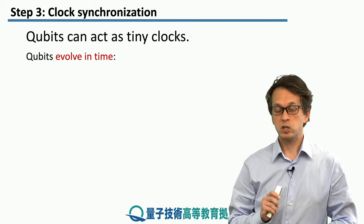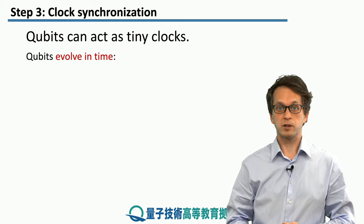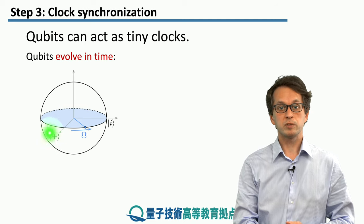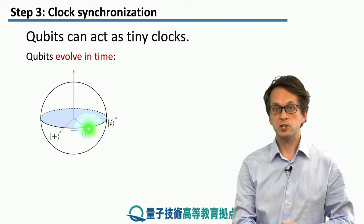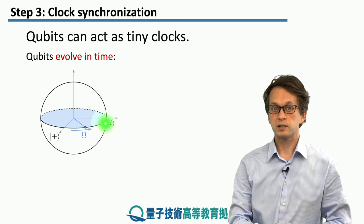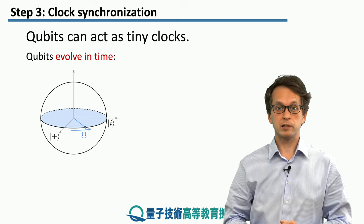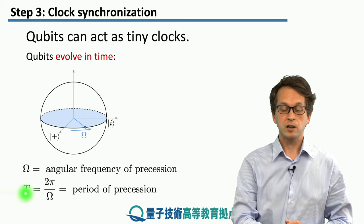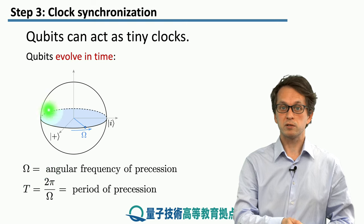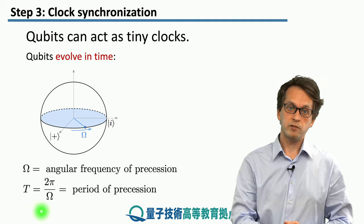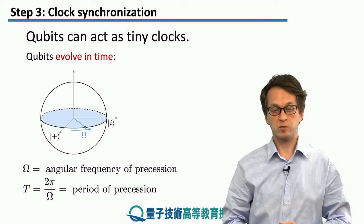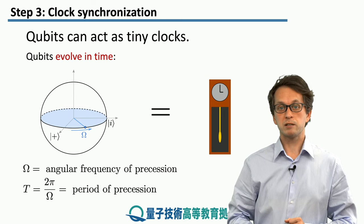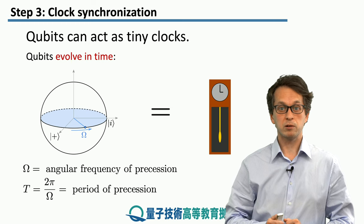The third scheme realizes that qubits can act as tiny clocks. Qubits evolve in time — for example, if we prepare a qubit in an equal superposition of |0⟩ and |1⟩, we can make it change its state in time such that it goes around the x-y plane of the Bloch sphere with angular frequency Ω. We initialize it in the |+⟩ state, and after time T — the period of precession — it completes one full circle of 2π radians. The period of precession is T = 2π/Ω. In this sense it is just like a grandfather clock: if we track how many times it goes around the x-y plane, we can track time, knowing the angular frequency of precession.